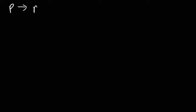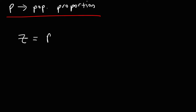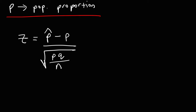Now, sometimes you can be dealing with the population proportion — that's going to be P instead of mu. In this case, we're going to use a different formula to calculate Z. The formula is: the sample proportion minus the population proportion, divided by the square root of PQ over N. N is still inside the square root, and Q is 1 minus P.